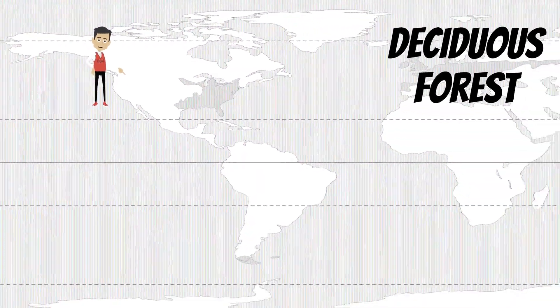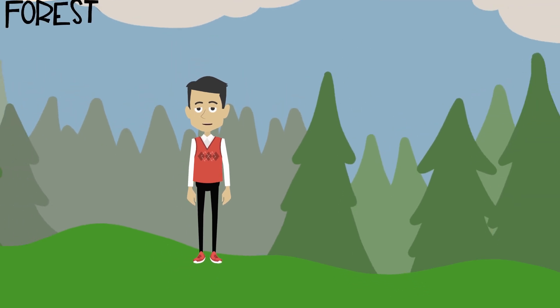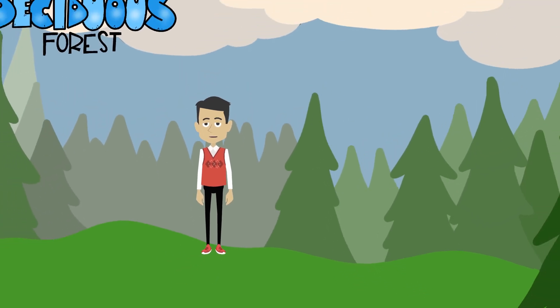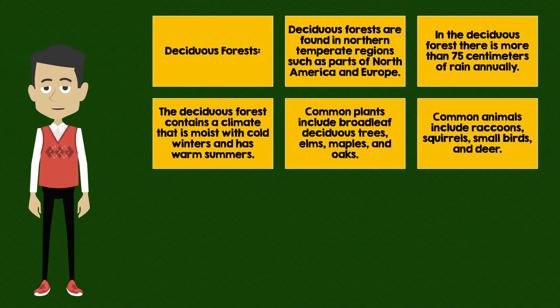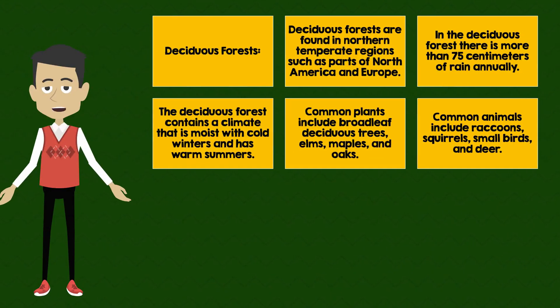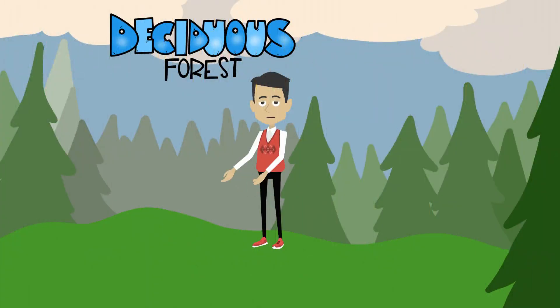In the deciduous forest, there is more than 75 centimeters of rain annually. The deciduous forest contains a climate that is moist with cold winters and warm summers.